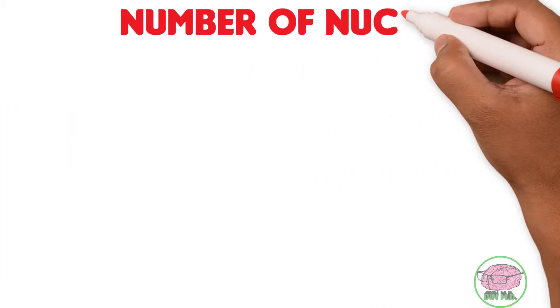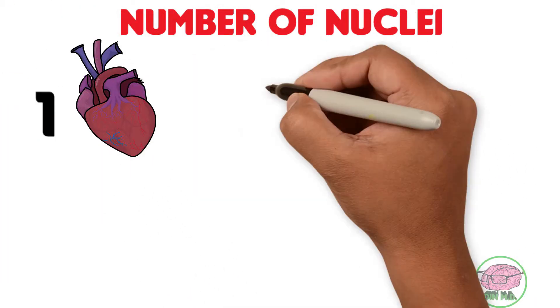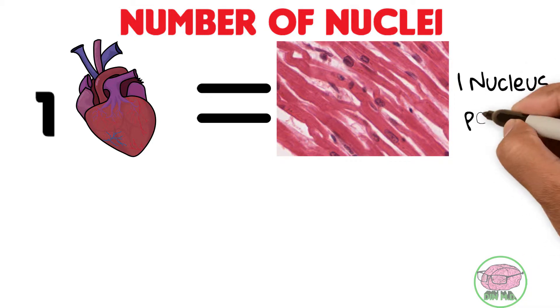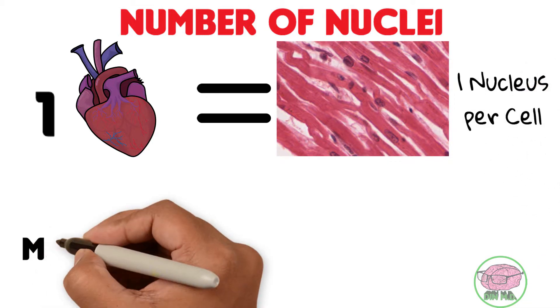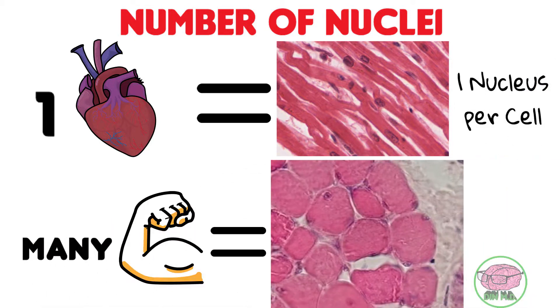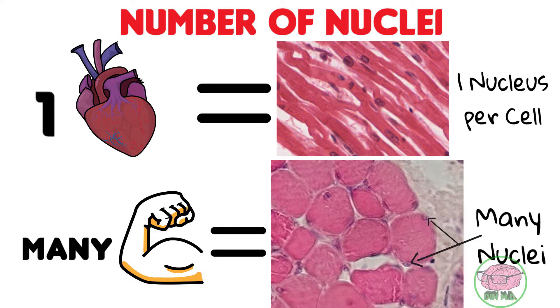Also, you have only one heart, so usually there is one nucleus per heart muscle cell. But you have many skeletal muscles — therefore, one long fiber of skeletal muscle has multiple nuclei, meaning that it is multinucleated.